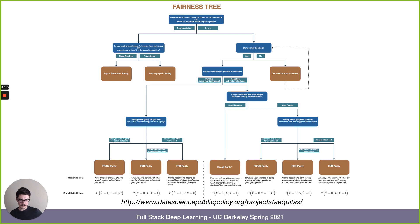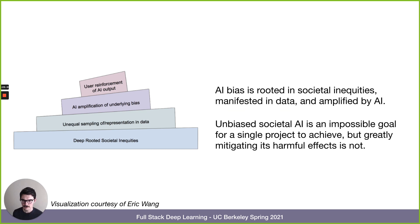One framing from a colleague: as we deploy ML systems, we recognize we're building on a crooked foundation. There are deep-rooted inequities in society, unequal sampling and representation in training data, and we risk deploying AI systems that amplify these underlying biases. Furthermore, when users see the AI output, they may further reinforce it.